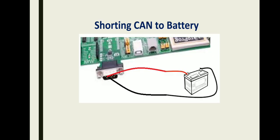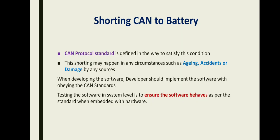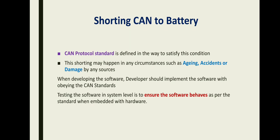The next condition is shorting the CAN lines to the battery. We have the CAN high and CAN low lines, and if we short them with the battery, the bus off will also occur. As per the standard, the CAN high to low short should cause bus off. The same reasons apply here — aging, accidents, or damage. The tester as well as the developer must ensure the software complies with the standard.